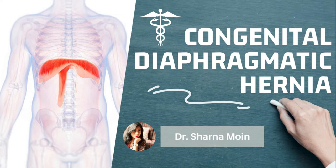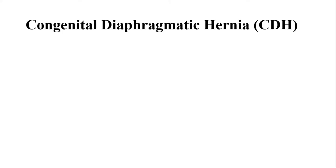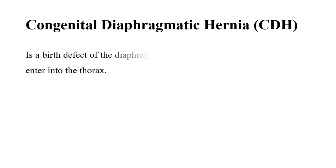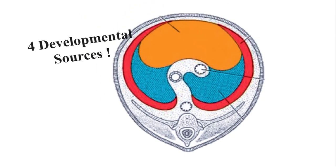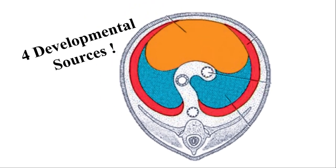Congenital diaphragmatic hernia, also known as CDH, is a birth defect of the diaphragm through which the abdominal contents enter into the thorax and may give rise to different types of complications. Normally there are four developmental sources of the diaphragm — four structures needed for its development.